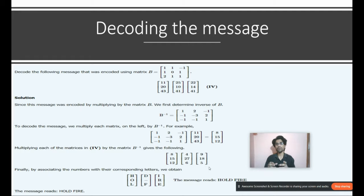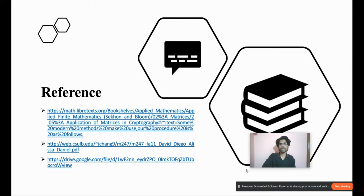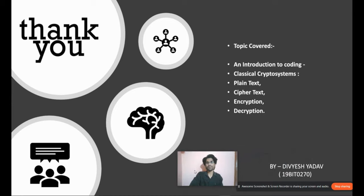Now we compare these values step by step using the coded table: 8=H, 15=O, 12=L, and so on — giving the decoded message. I hope you have understood this topic. This is the reference material I used. In this video I covered plain text, cipher text, encryption and decryption using matrix methods. Thank you for watching — if you have any doubts please let me know by email. Bye bye!